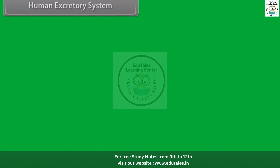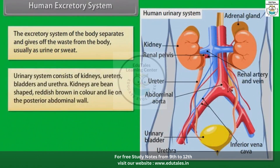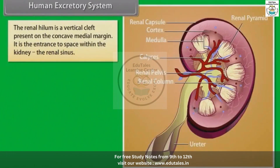Human excretory system. The excretory system of the body separates and gives off waste from the body, usually as urine or sweat. The urinary system consists of kidneys, ureters, bladders and urethra. Kidneys are bean-shaped, reddish-brown in colour and lie on the posterior abdominal wall. Each kidney in an adult human weighs about 150 grams and measures approximately 10 cm in length, 5 cm in width and 2.5 cm in thickness. The renal hilum is a vertical cleft present on the concave medial margin — it is the entrance to the space within the kidney, called the renal sinus.